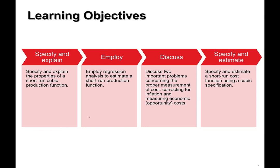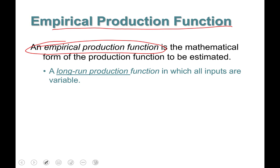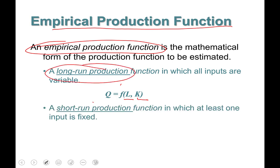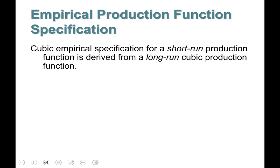The focus of this part will be on setting up a short-run cubic production function. An empirical production function is the mathematical form of the production function that we are to estimate. The long-run production function has all inputs variable: Q = f(L, K). In the short run, we assume at least one input is fixed — capital is fixed — so output becomes a function of labor only: Q = g(L).